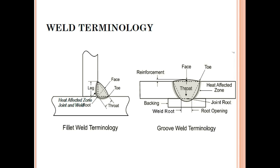Here is the weld terminology. For a fillet weld, you can see the throat, the leg length, the face, the toe, the heat affected zone, and the weld root. For a groove weld, terminology includes backing, root opening, root spacing, joint root, heat affected zone, reinforcement, the face, and the toe. It is very important to know these terms because every weld has limitations defined for each of these locations.